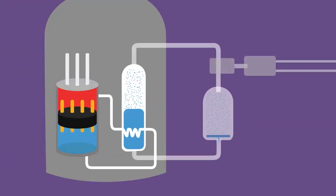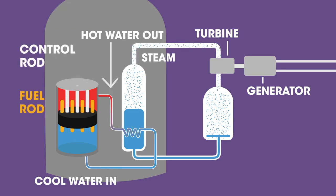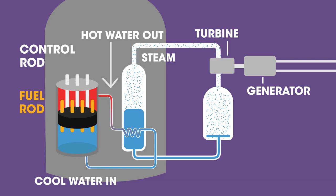In a nuclear reactor, the controlled, slow release of energy is used to heat up a closed loop of coolant, which passes to heat exchangers that boil water to provide steam to turn electrical generators. The output of the reactor is altered by raising or lowering the control rods in the core. These rods absorb neutrons and so determine how much fission is taking place.